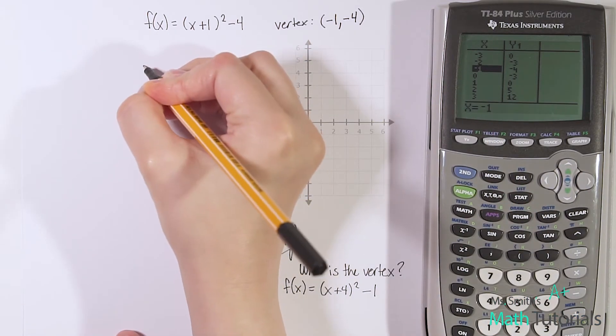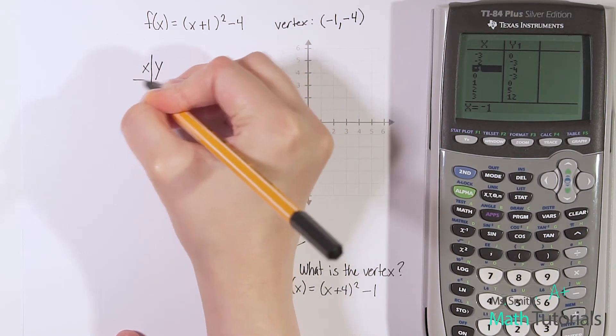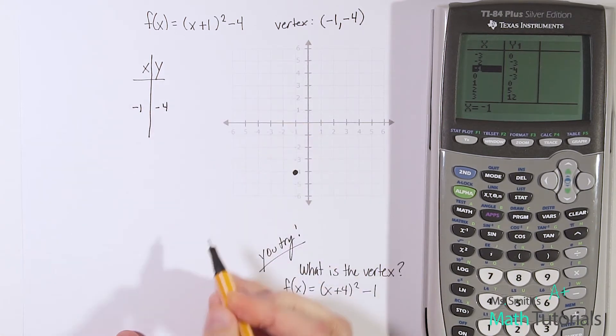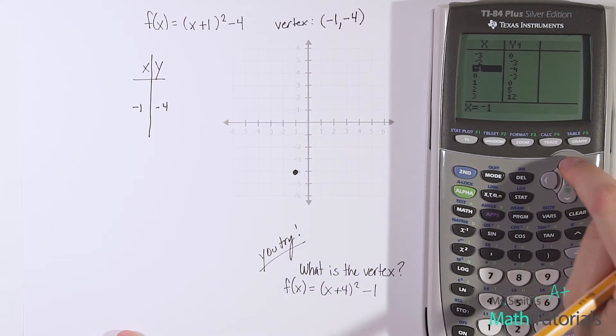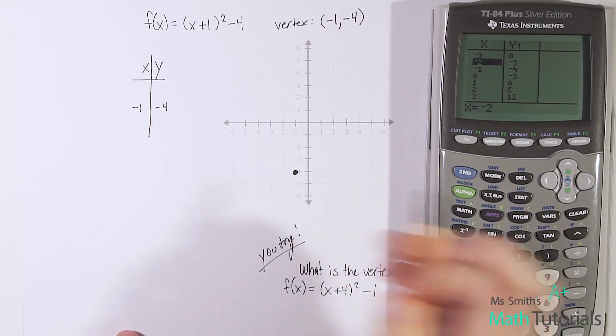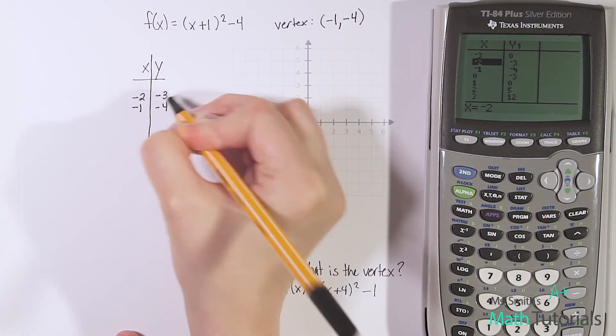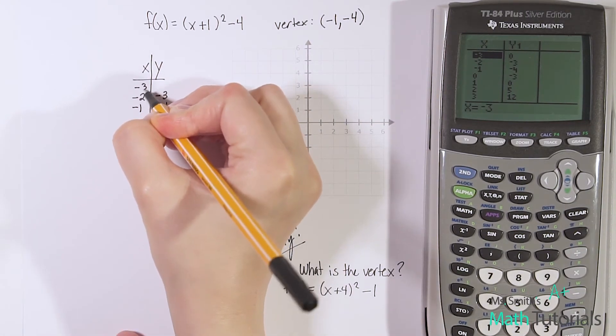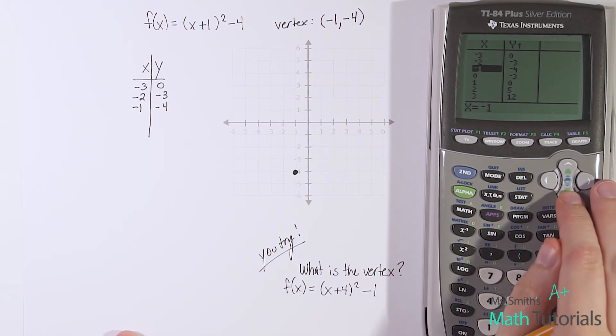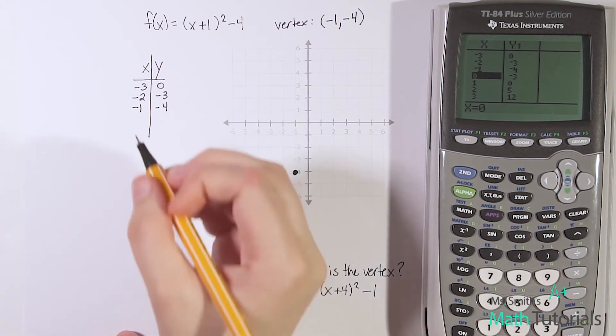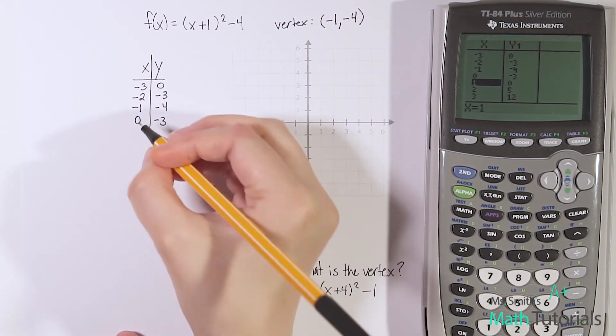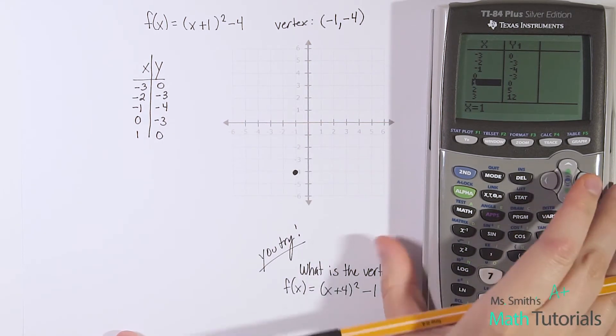And I want to build two points above that and two points below that. So let me make a little xy table over here to help me. I want to put my vertex in the very middle, negative 1, negative 4. And I want to do two points above and two points below. That'll give me a good, nice shape to my parabola. So negative 2, negative 3. And we'll go one more. Negative 3, 0. And then we'll go two points below. So 0, negative 3. And 1, 0.